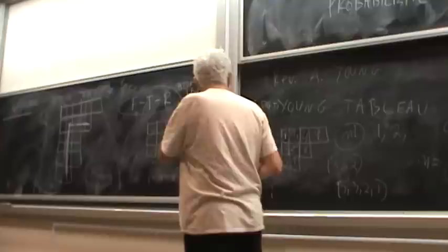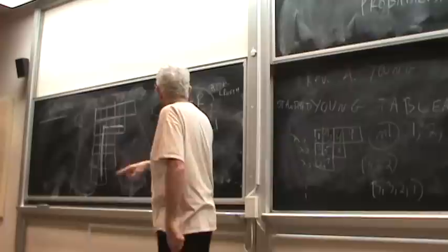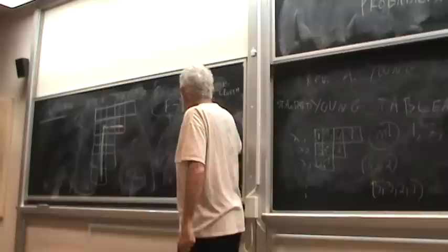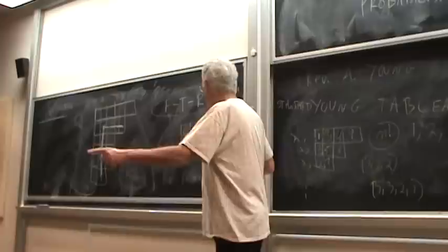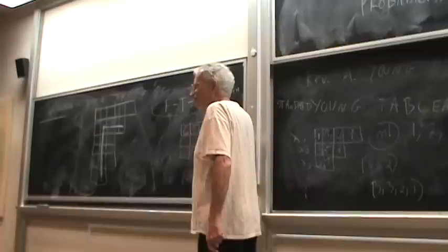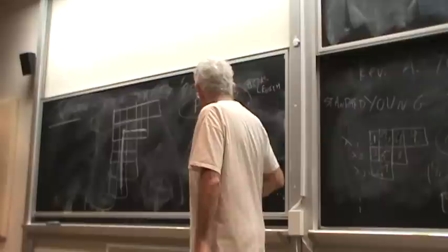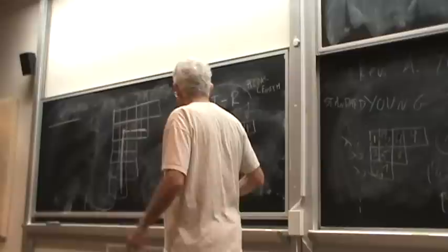So we look at the hook lengths. Brian, what's the hook length of this cell? One. What's the hook length of this? Three. John, what's the hook length of this cell? One. Tim, what's the hook length of this? Four. Matt, hook length of this? Three. Pat, hook length of this? One. Pat, what's the hook length of this? Two.